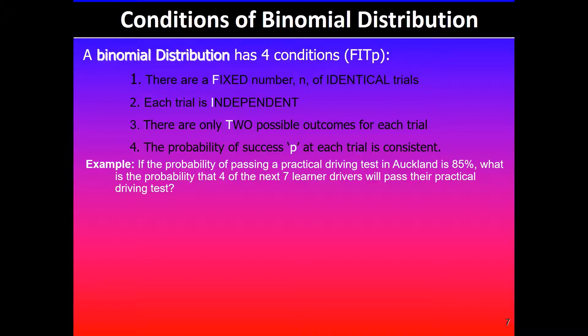If the probability of passing a practical driving test in Auckland is 85%, what is the probability that four of the next seven learner drivers will pass their practical driving test? What you will need to do first is see if the scenario given is a binomial distribution. We're given the number of people, learner drivers, and that will be classed as discrete data because we can count number of drivers.